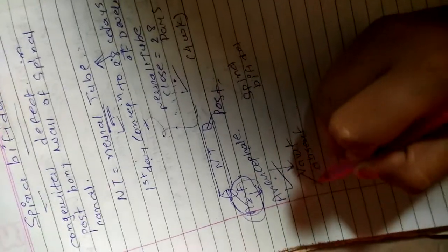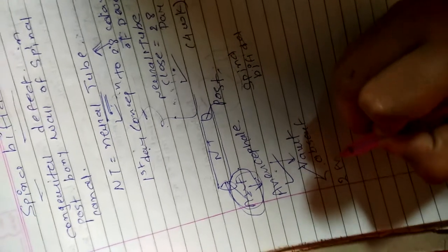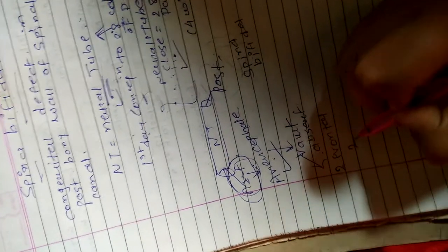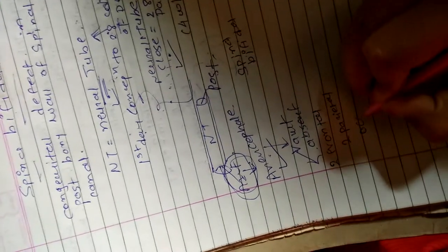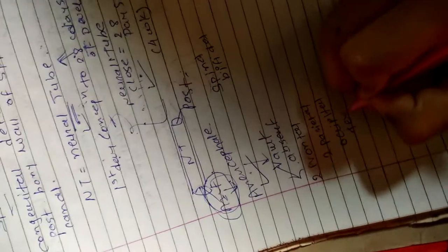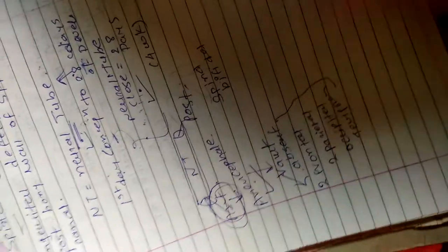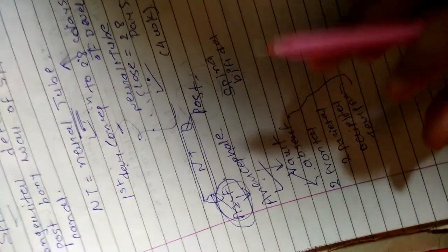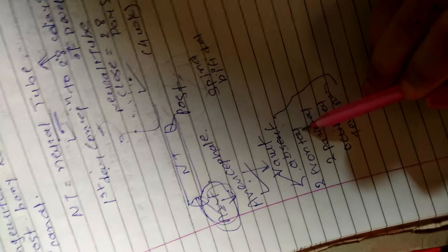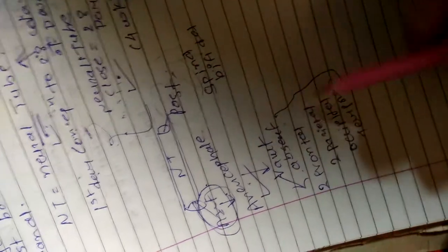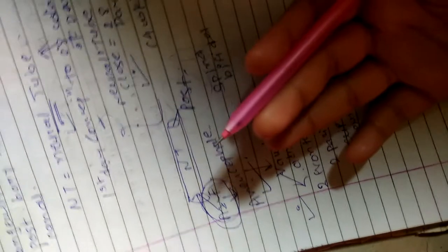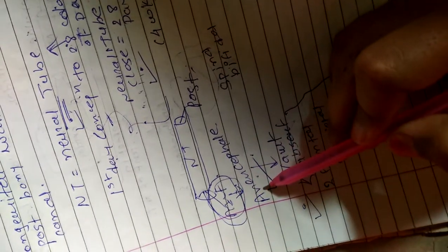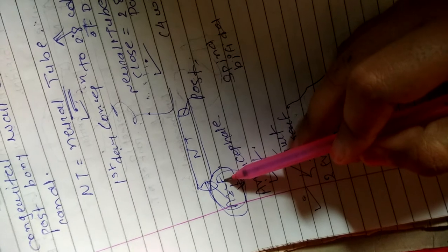In anencephaly, the vault is absent. The vault includes the two frontal lobes, two parietal, occipital, and temporal bones. There is some abnormality present and no complete development of these bones. That defect is known as anencephaly. Generally this child does not survive.